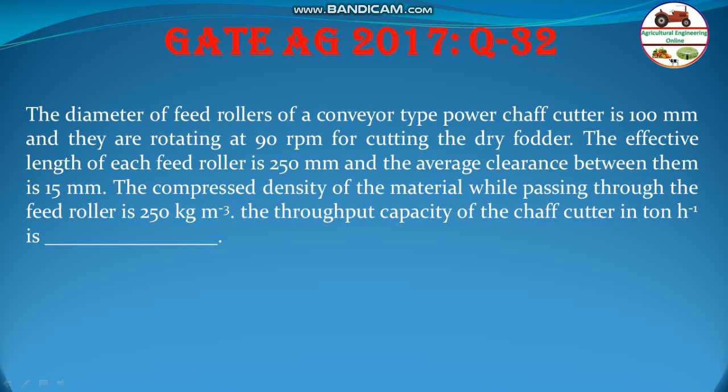The diameter of feed roller of a conveyor type power chaff cutter is 100 millimeter and they are rotating at 90 rpm for cutting the dry fodder. The effective length of each feed roller is 250 millimeter and the average clearance between them is 15 millimeter. The compressed density of the material while passing through the feed roller is 250 kg per cubic meter. The throughput capacity of the chaff cutter in ton per hour is?